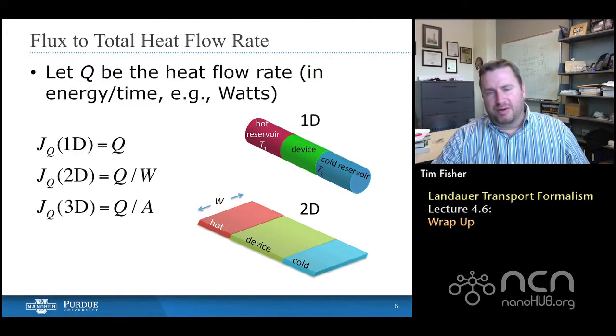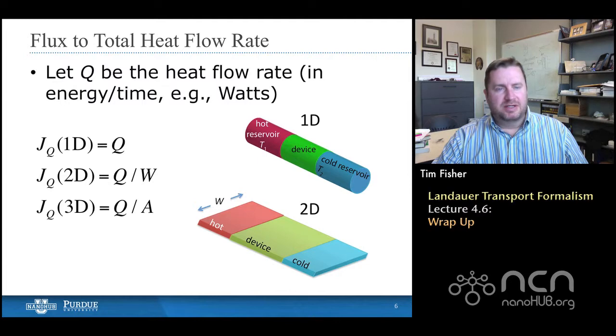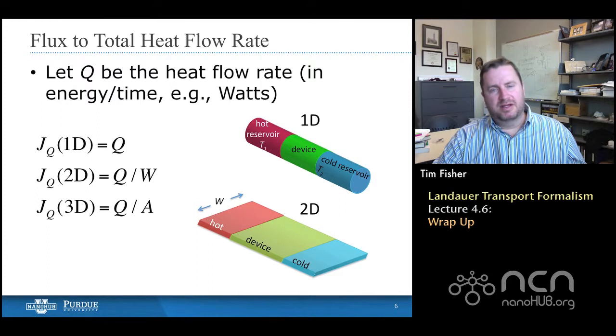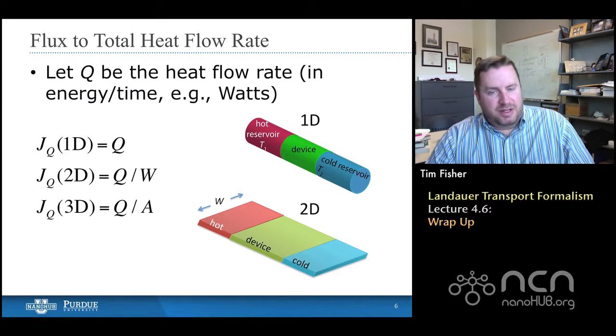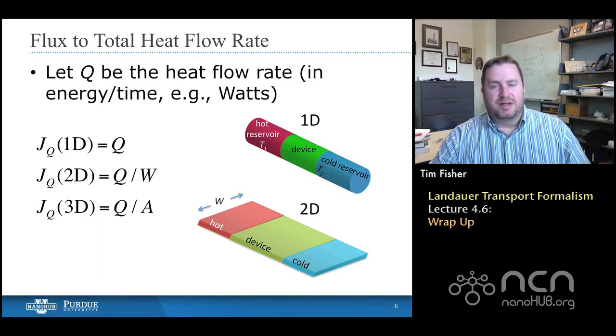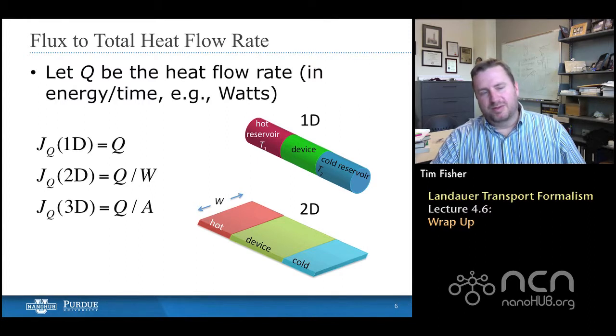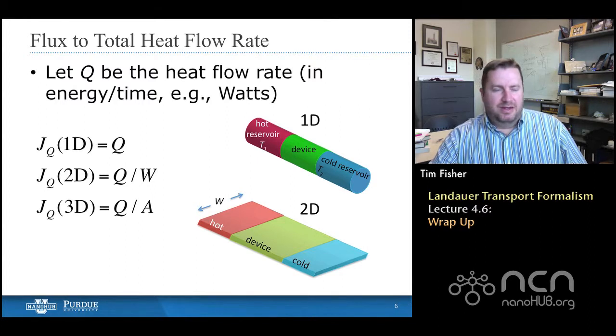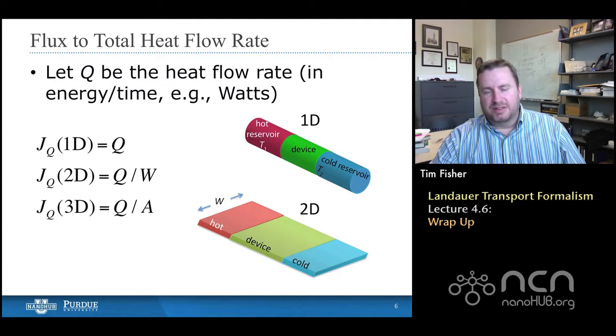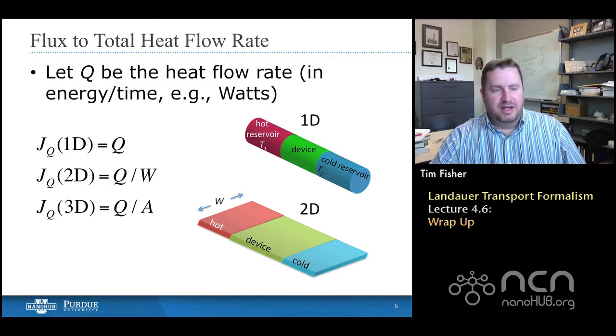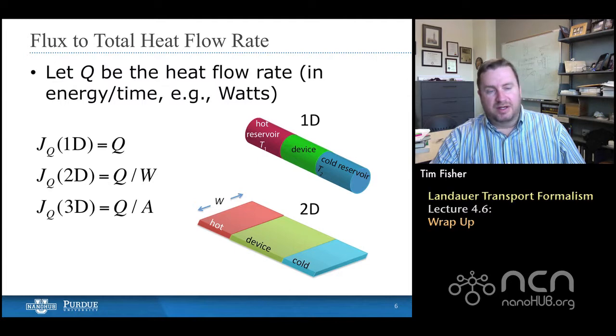So this is just really a reminder slide when we talk about heat flux, J. Heat flux is the heat flow rate divided by the cross-sectional area. And we put area in quotes because area really has meaning in three dimensions, at least in the sense of a flux. It's the true area. That's the bottom equation here. But our area in quotes in two dimensions is actually a width. And then in a one-dimensional problem, the cross-sectional area for transport is really not defined. And so the heat flux is also the heat flow rate Q.